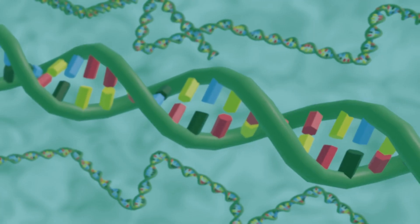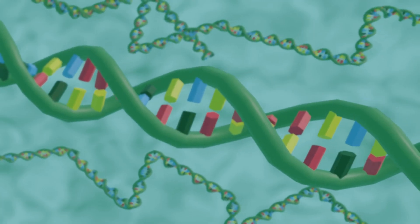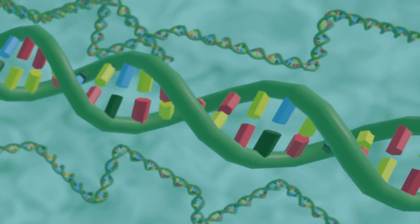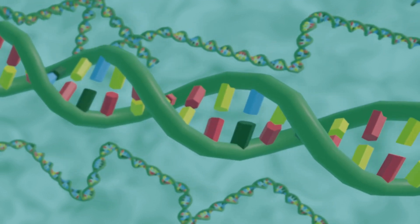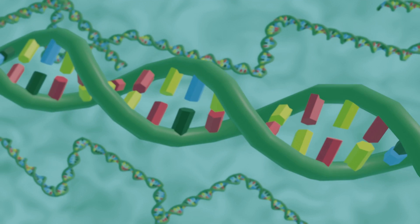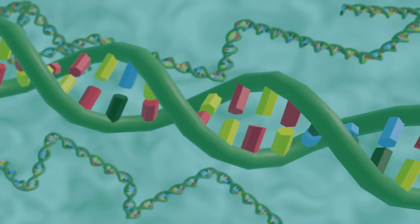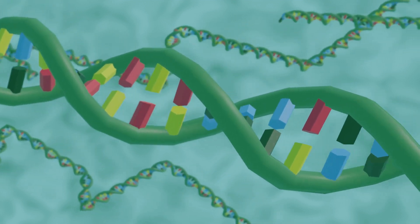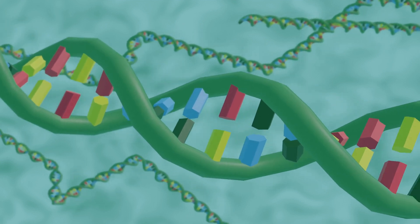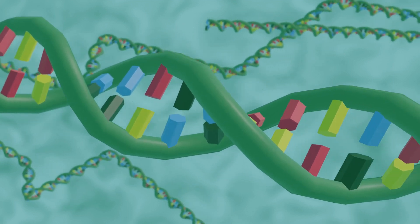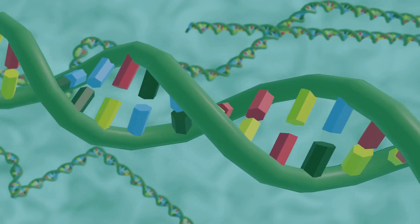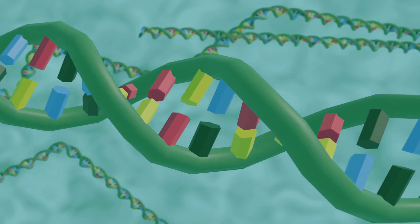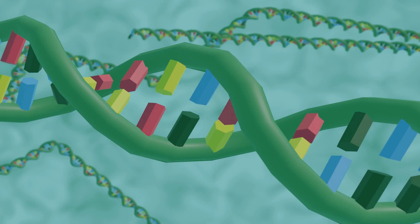DNA is a self-replicating structure. Replication needs to occur because existing cells divide to produce new cells, and each cell needs a full instruction manual to operate properly. So the DNA needs to be copied before cell division. DNA replication is catalyzed by a set of enzymes.